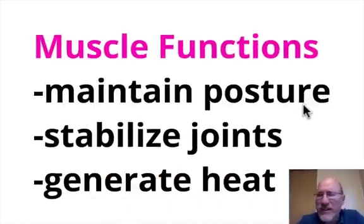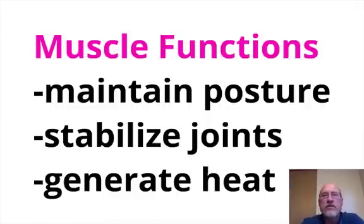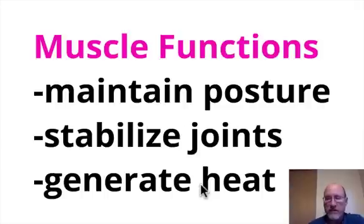Muscles, when you get right down to it, have one function and one function only, and that is to contract — to essentially get shorter, to become reduced in size. When a muscle contracts, that creates all the movements we're capable of, so muscles are really analogous to machines. In anatomy class, we want a bit more detail, so muscle functions include maintaining posture, stabilizing the joints, generating body heat, and more. But really, muscles do basically one thing: they contract. When they're not contracting, they're relaxing.